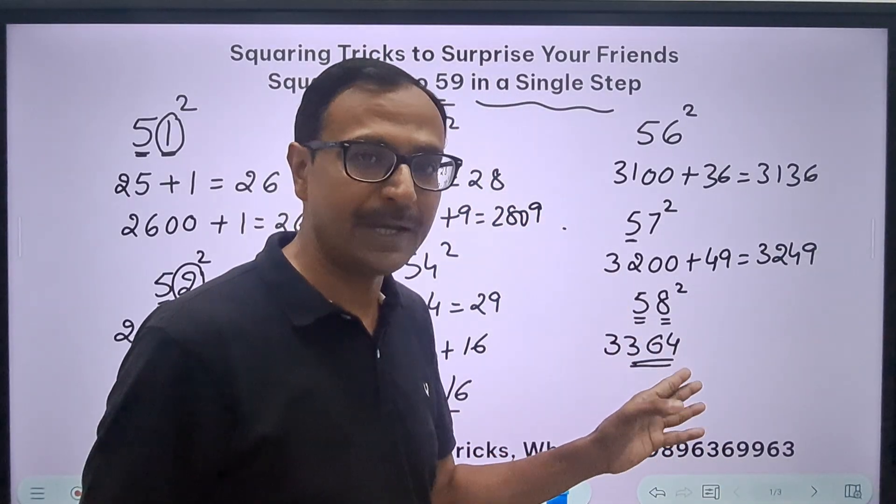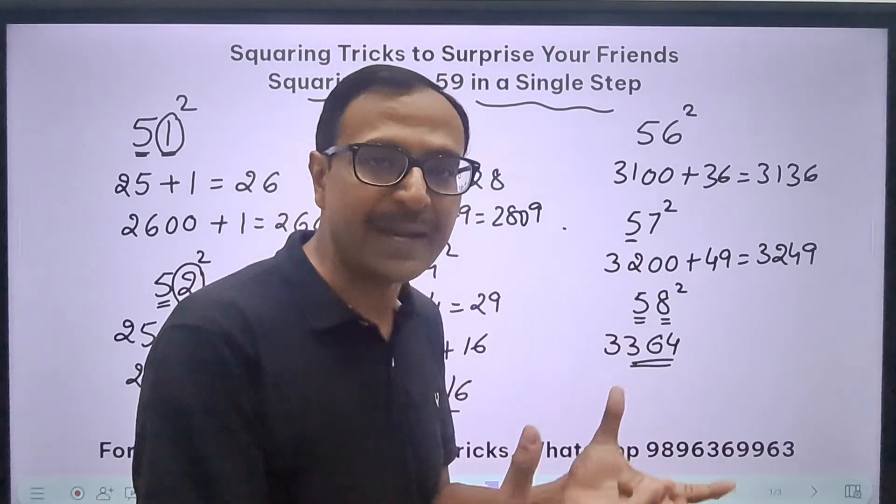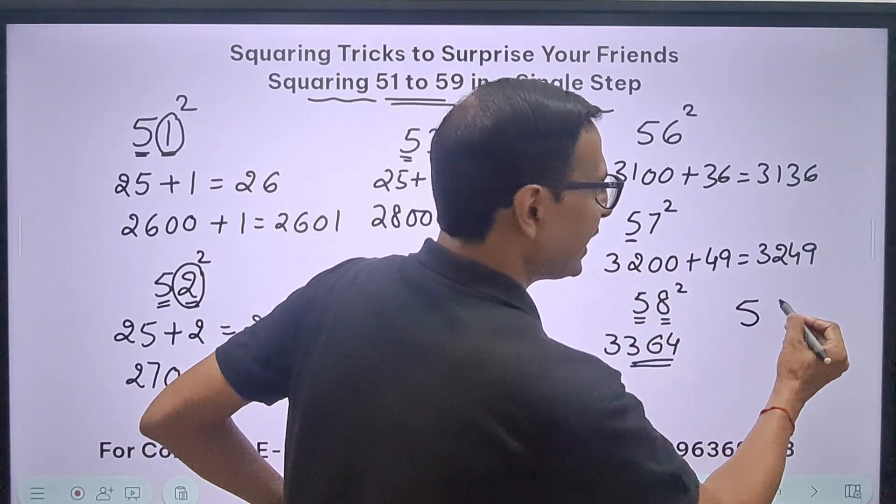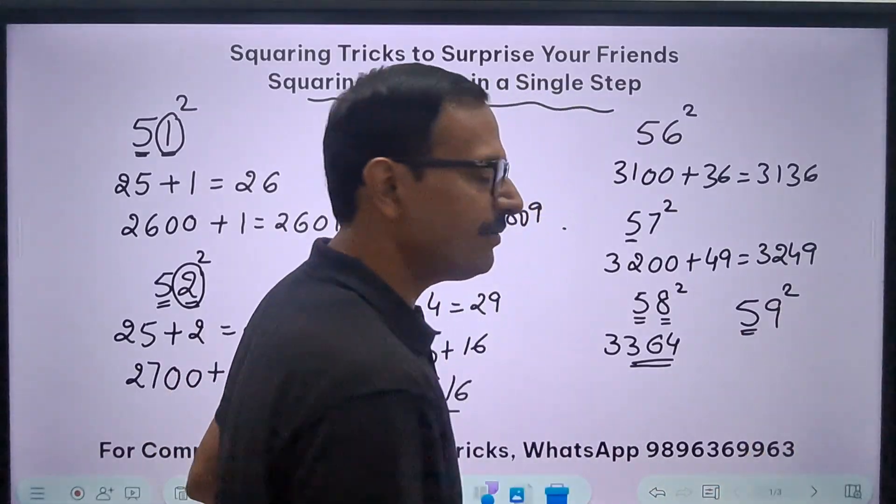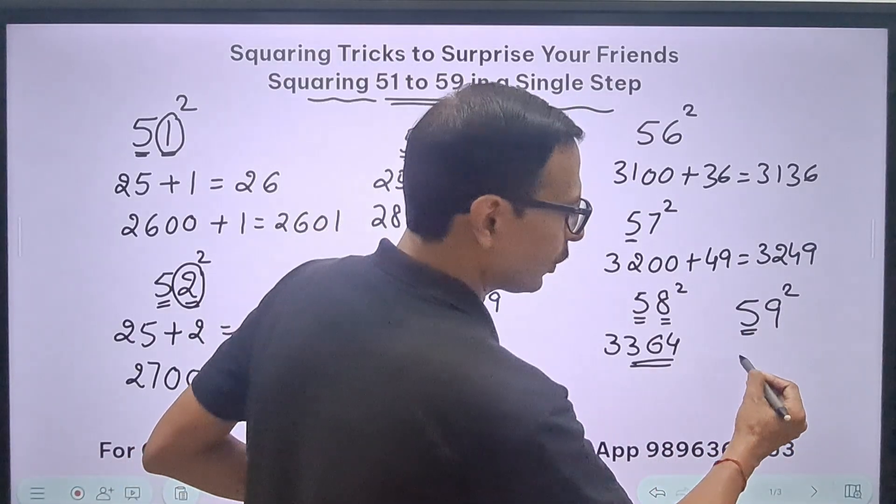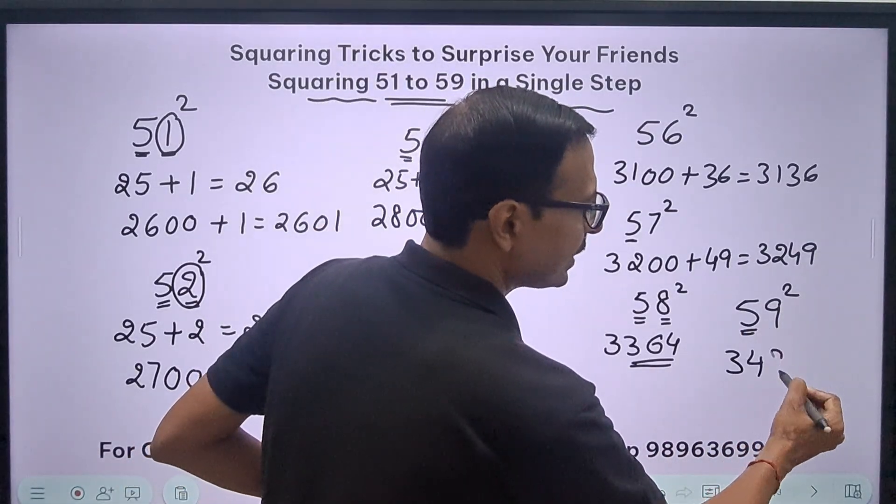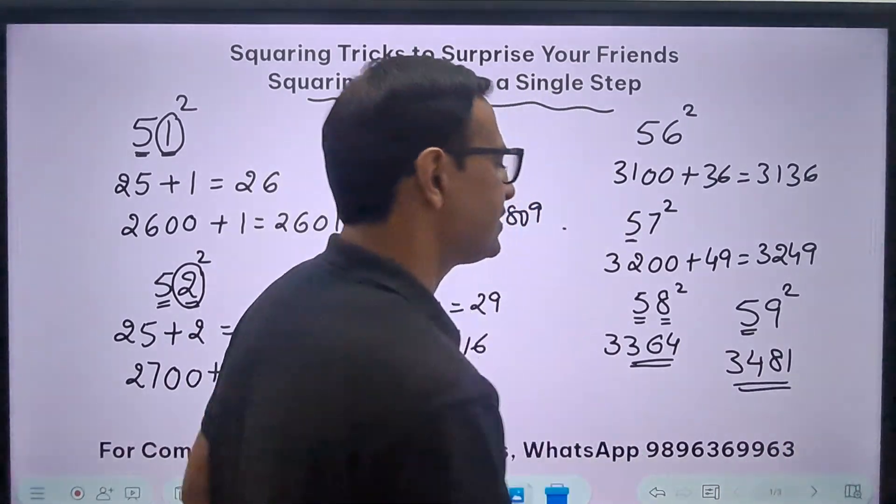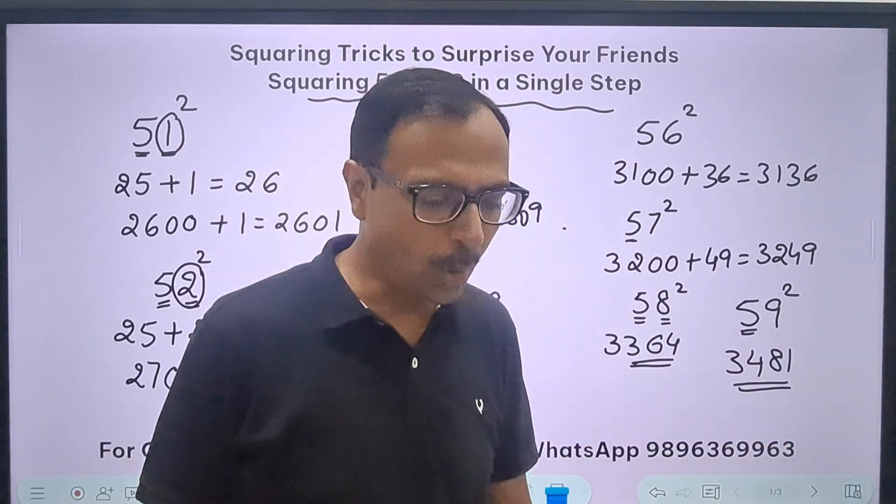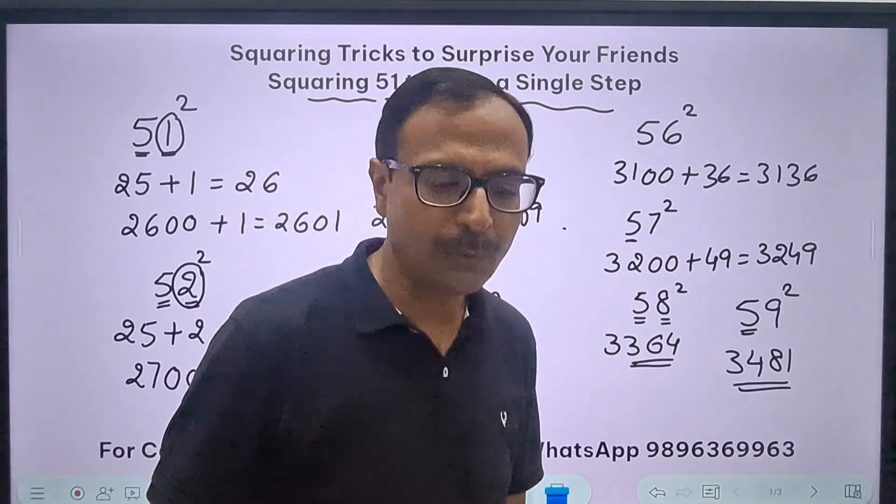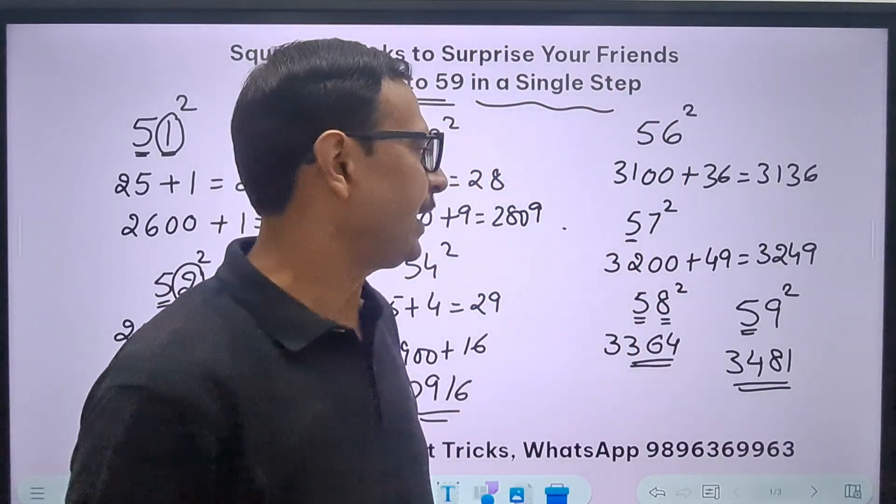See, now I am writing it virtually directly without using any steps. How about 59 square? See, 25 plus 9 is 34, and 9 square is 81. So all these squares they can be found out really very quickly.